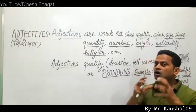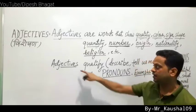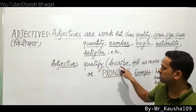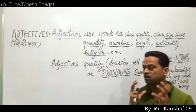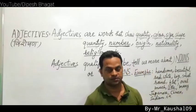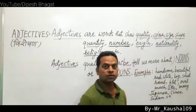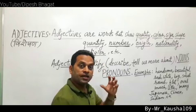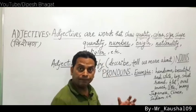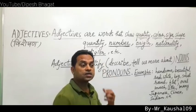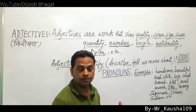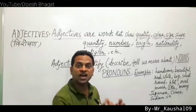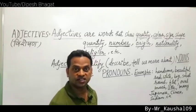So the words that qualify, describe, or tell us more about a noun or pronoun — they are called adjectives. In Nepali: adjectives (viceshan) are the words that give additional information (badi janakari) about naam (noun) or sarva naam (pronoun).